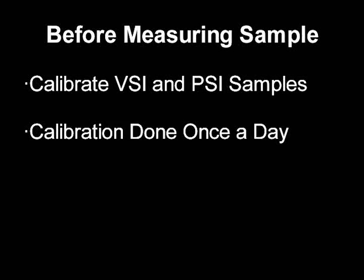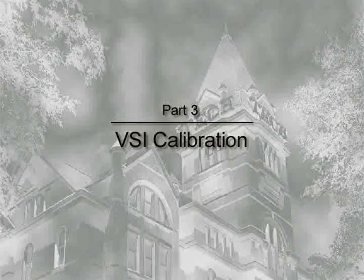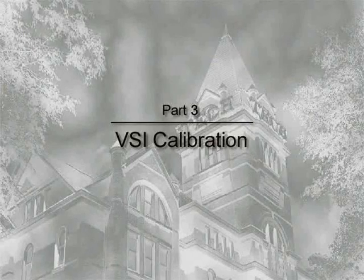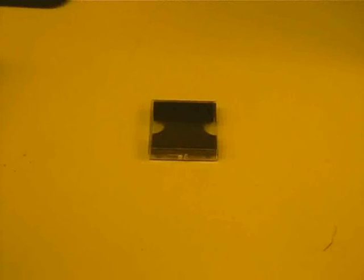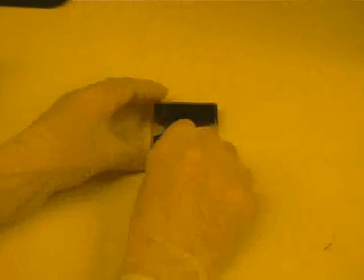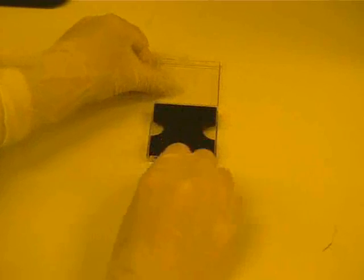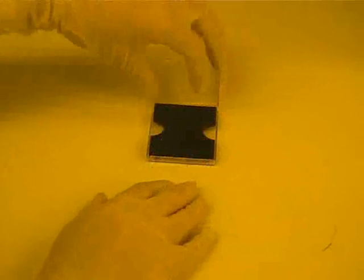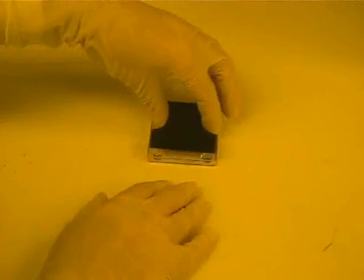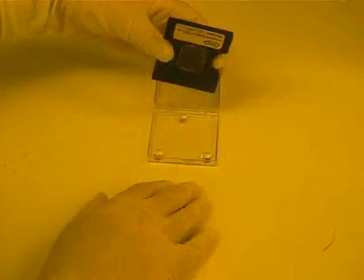Before we perform a measurement on our sample, we need to calibrate both the VSI and PSI samples. This should be done at least once a day in order to ensure accurate data. The VSI calibration sample is stored in a plastic box. We store the VSI calibration sample face down to prevent contamination from landing on the surface.